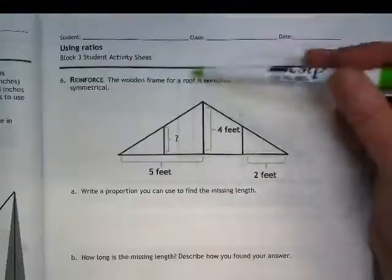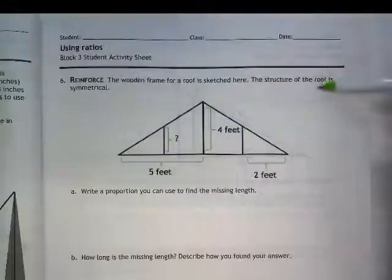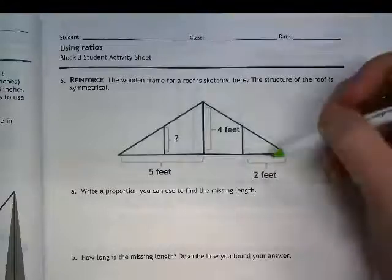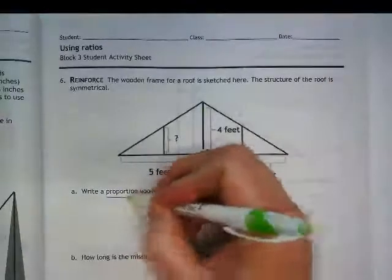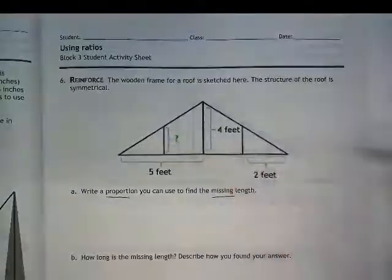We're looking here at a wooden frame for a roof. That's a sketch here. The structure of the roof is symmetrical, meaning both sides are the same. We're going to write a proportion that we can use to find the missing length. And here's our missing length right here.